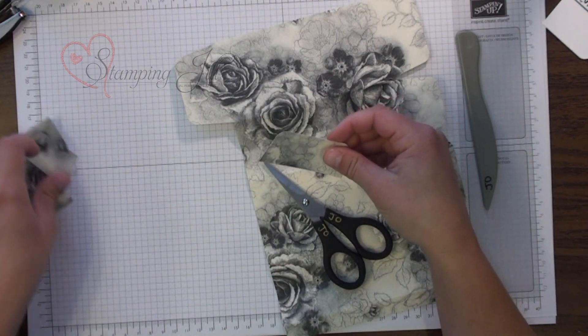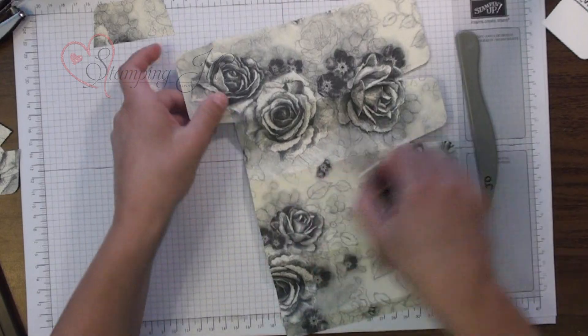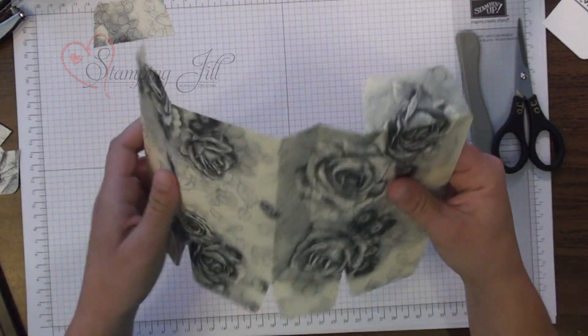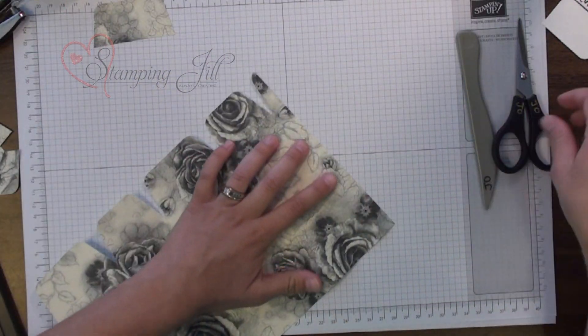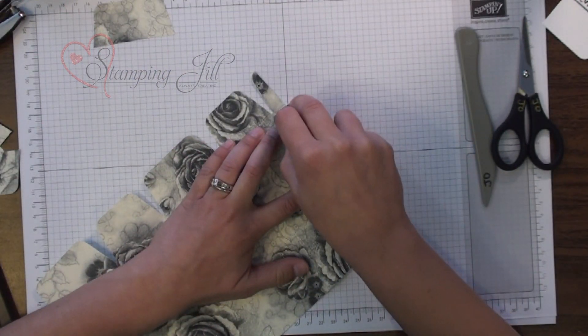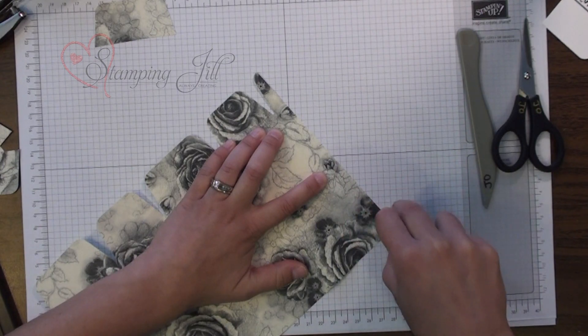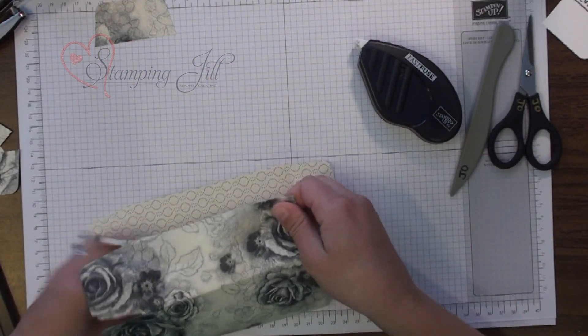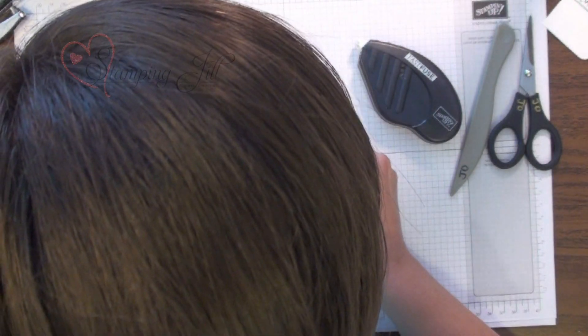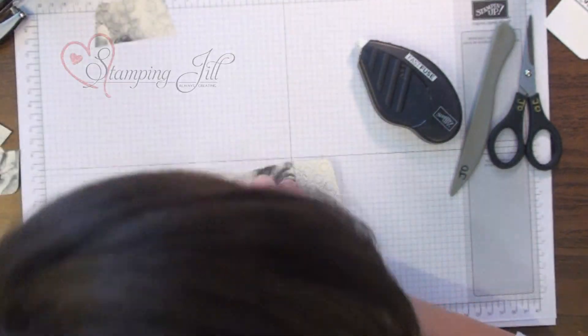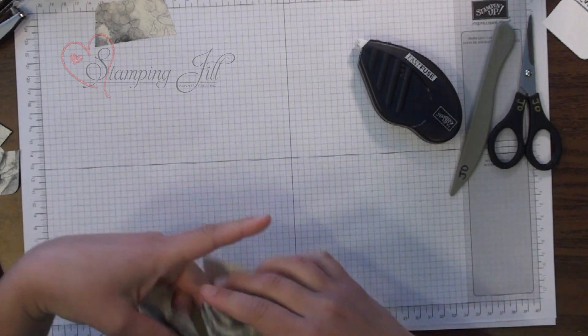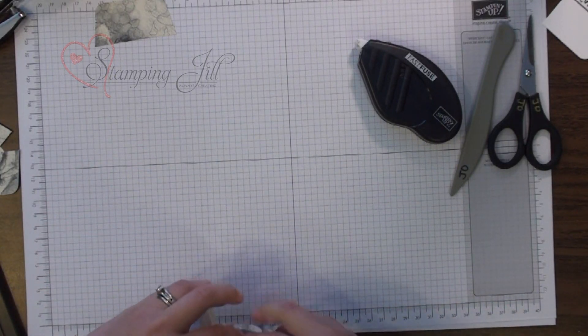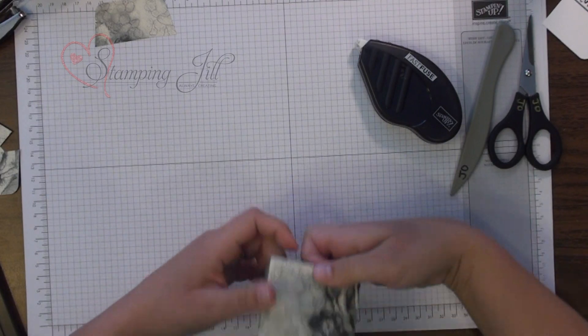Now you want to keep this flap because we're going to use that in our project. So then you fold your bag and I've kind of already folded mine, but I'm going to put some Fast Fuse adhesive on here. Fast Fuse is great for this project. It holds the bag together really well. So connect the bag and you're also going to fold in the bottom, which we're going to pretend that I glued all that up together.